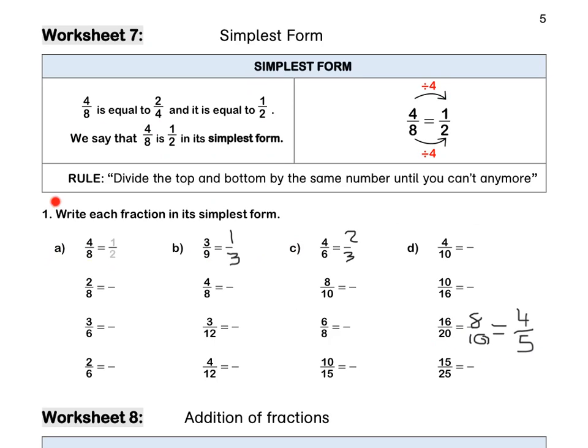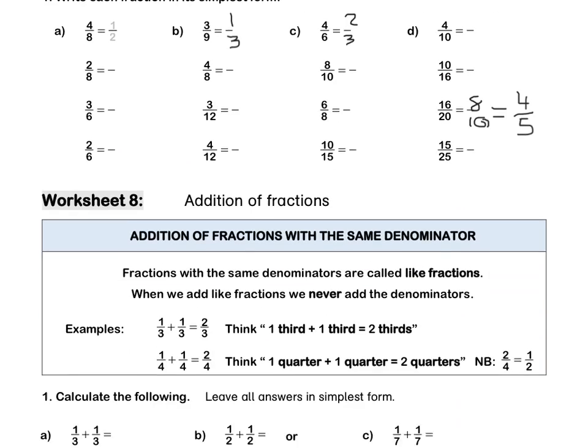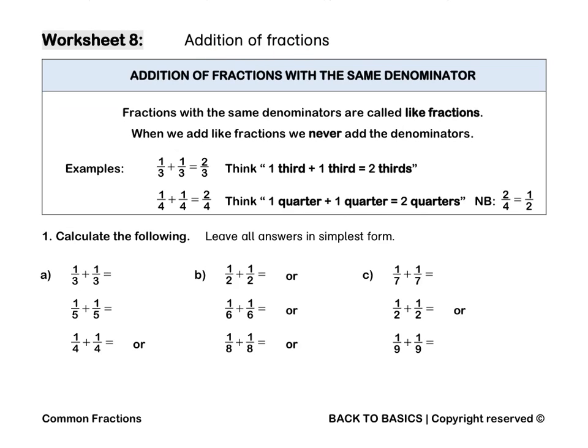Pause this video to complete question 1 by yourself. Worksheet 8: Addition of fractions. Fractions with the same denominators are called like fractions. When we add like fractions, we never add the denominators. One third plus one third is equal to two thirds. One quarter plus one quarter is equal to two quarters. And very importantly, two quarters is equal to one half in its simplest form. Question 1: Calculate the following and leave all answers in simplest form. Pause this video to do so. Use the memo to mark your work and correct it by yourself.